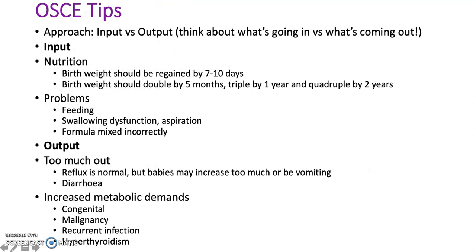OSCE tips: you should approach the OSCEs with an input versus output approach — think about what's going in versus what's coming out. For input, consider nutrition: birth weight should be regained by 7–10 days, doubled by 5 months, tripled by a year, and quadrupled by 2 years. Think about any problems such as feeding, swallowing dysfunction, and aspiration. Is the formula mixed incorrectly?